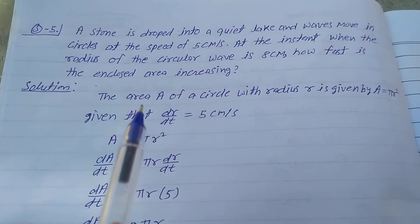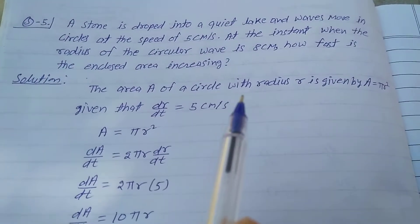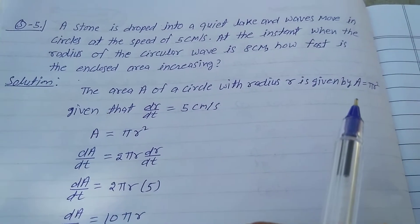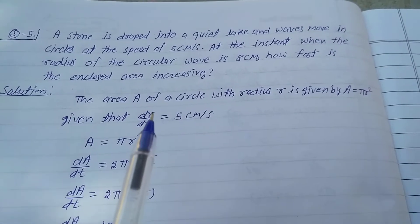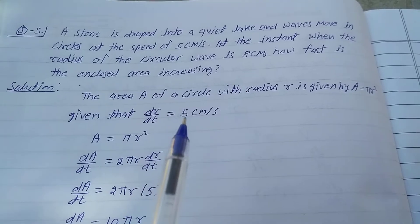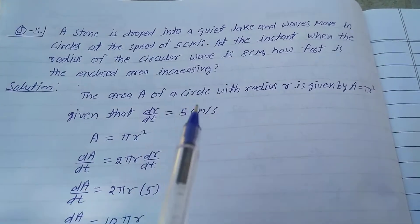Solution: The area A of a circle with radius r is given by A equals π r squared. Given that dr/dt equals 5 centimeters per second, as stated in the question.